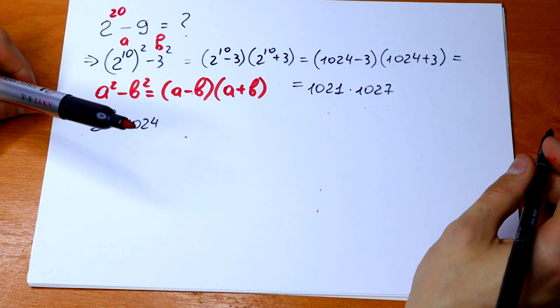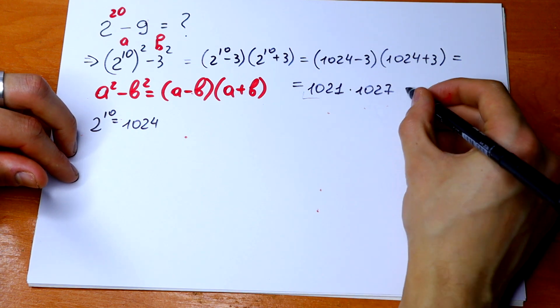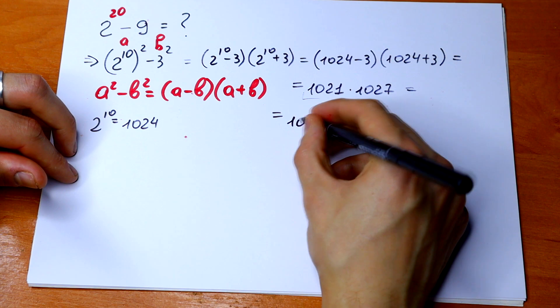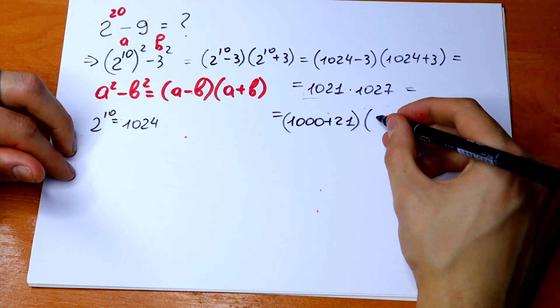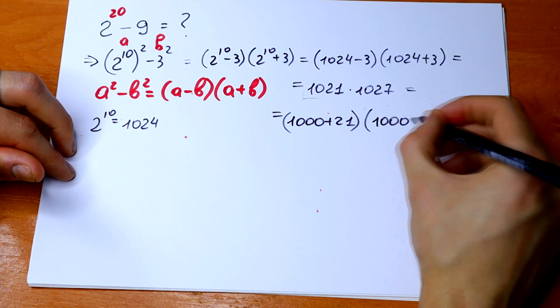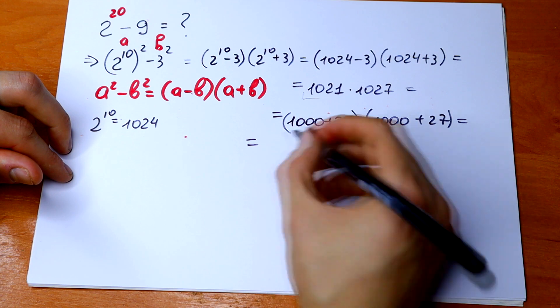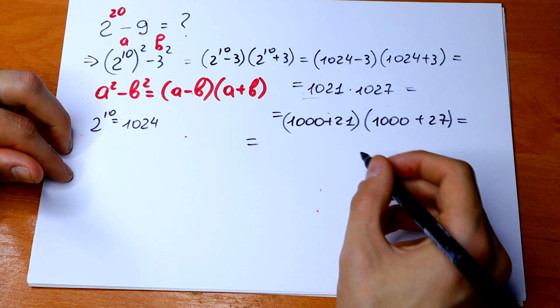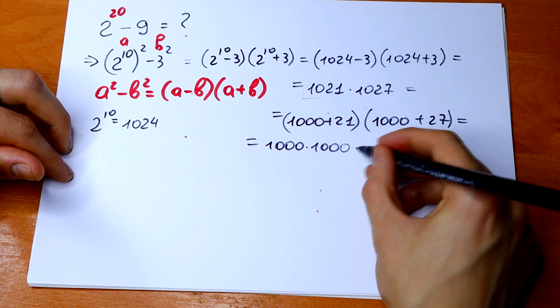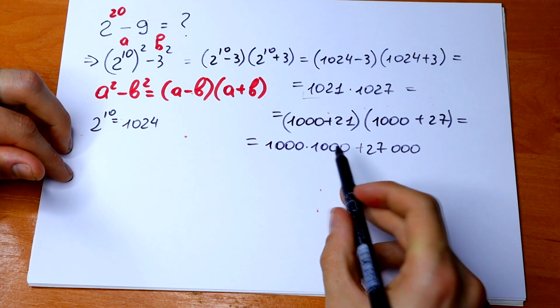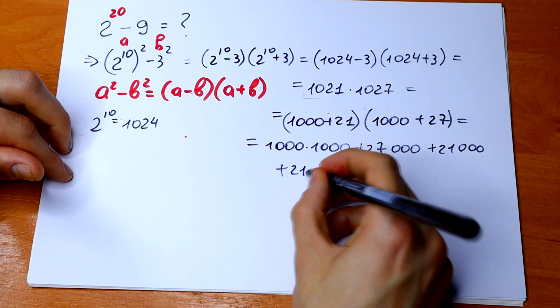And I'm going to suggest you a really good trick. Let's multiply these parentheses. We will have 1000 times 1000, plus 27,000, plus 21,000, and plus 21 times 27.